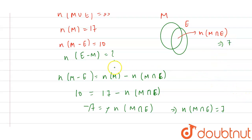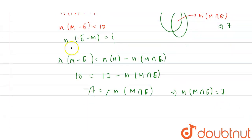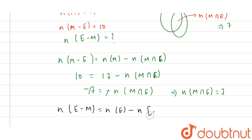Now for the value of n(E − M), we know the formula: n(E − M) = n(E) − n(E ∩ M). We have the value of n(M ∩ E) = 7, but we don't yet have the value of n(E), so we need to find it.